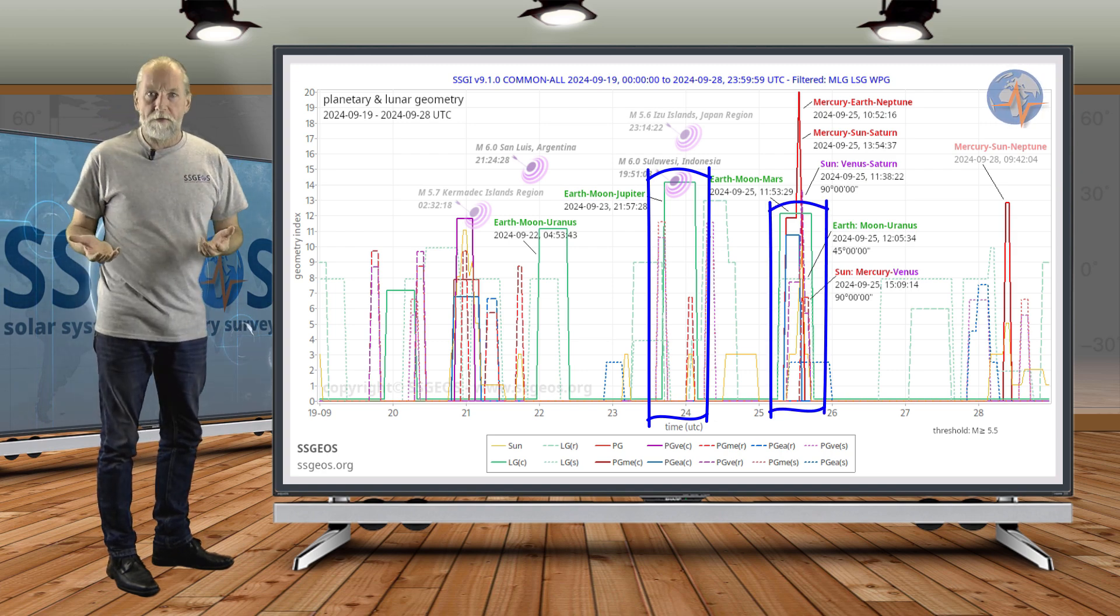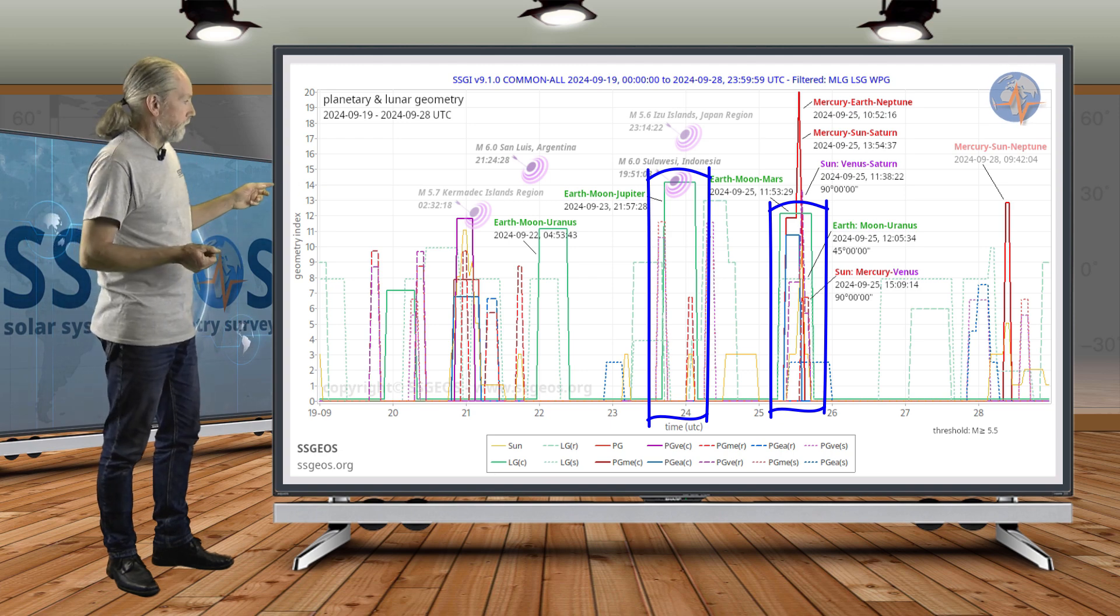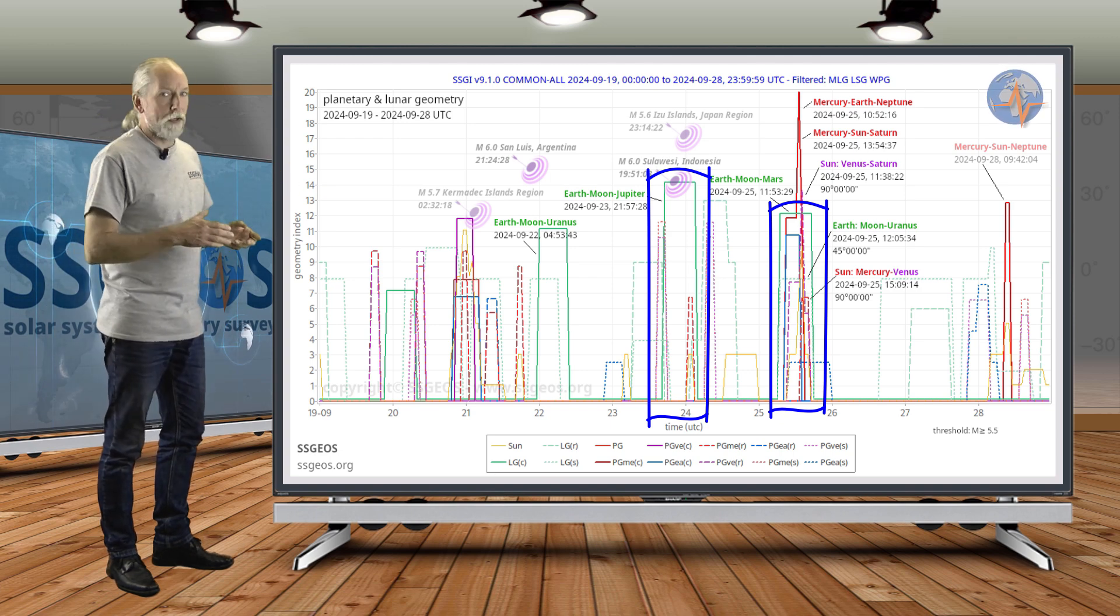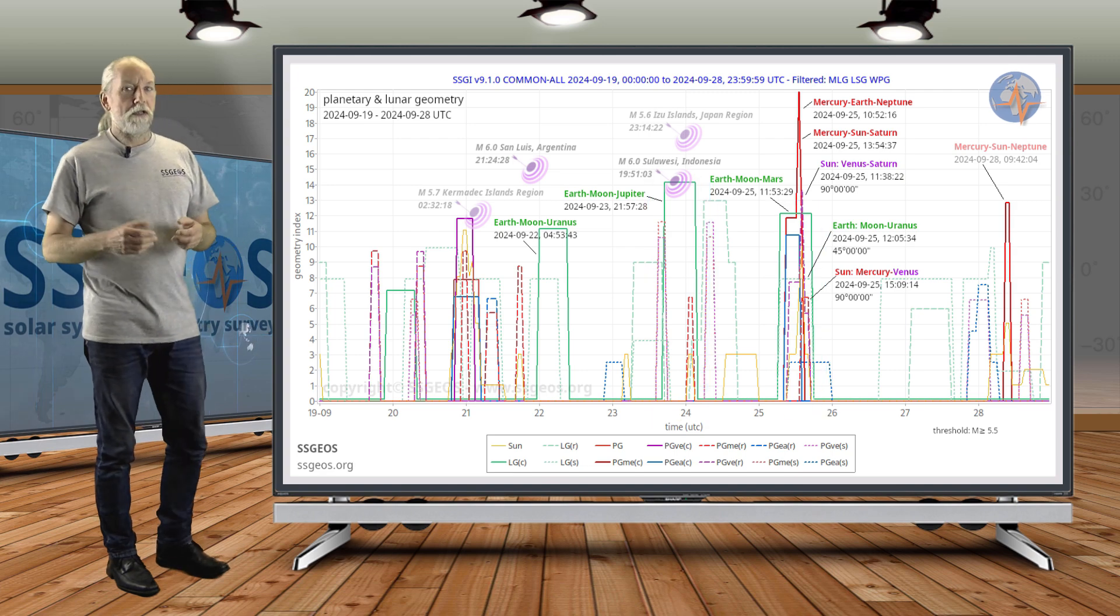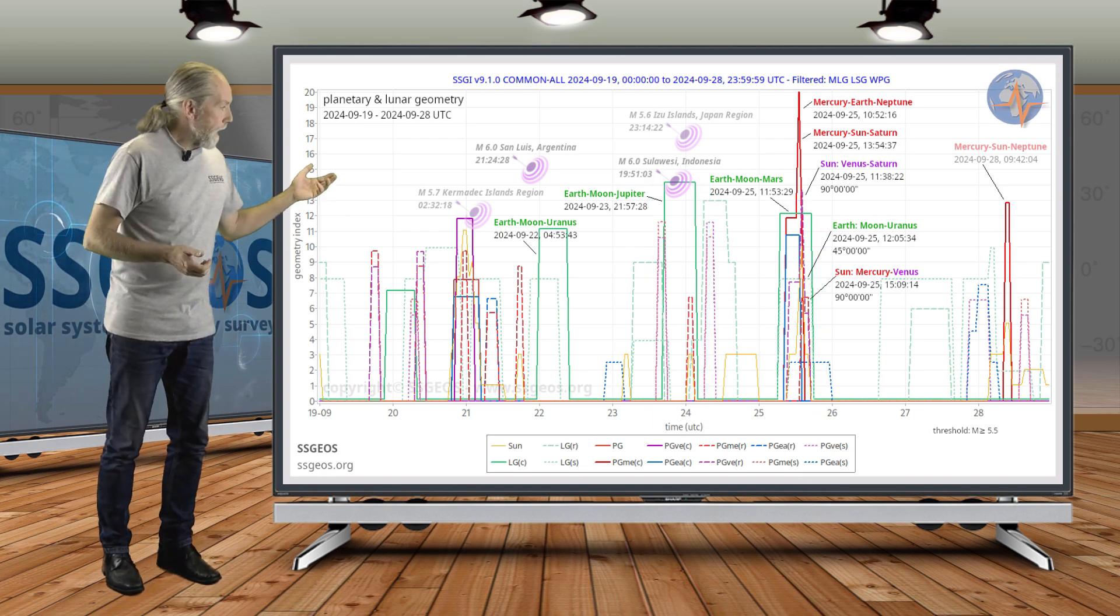If you count about two and a half days from the Jupiter conjunction on the 23rd, we end up later today or tomorrow, and there could be a higher 6 to 7 magnitude earthquake as a result. But we have this high peak here on the 25th, and this is really tight convergence.